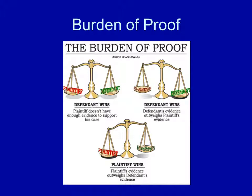Plaintiff and defendant are terms used in civil trials. In a criminal trial, you're familiar with the phrase 'innocent until proven guilty.' The accused does not need to prove innocence — it is the job of the prosecution to prove guilt. If the jury decides there isn't enough proof, the defendant goes free: innocent until proven guilty.